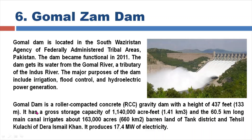The major purposes of Gomal Zam Dam include irrigation, flood control, and hydroelectric power generation. It is a roller-compacted concrete gravity dam with a height of 437 feet. It has a gross storage capacity of approximately 1,140,000 acre feet and a 60-kilometer-long canal. It irrigates about 163,000 acres of barren land in Dera Ismail Khan district.